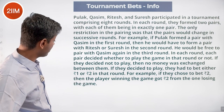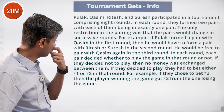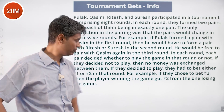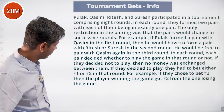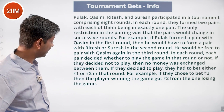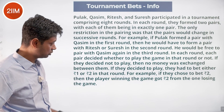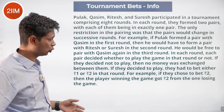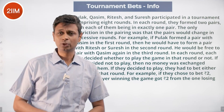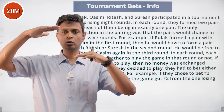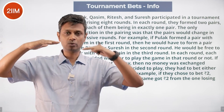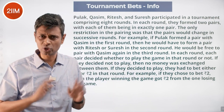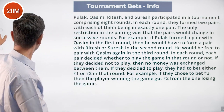In each round, each pair decided whether to play the game in that round or not. If they decided not to play, then no money was exchanged between them. If they decided to play, they had to bet either one or two rupees. For example, if they chose to bet two, the player winning the game got two rupees from the one losing. So two people playing could result in plus two/minus two, plus one/minus one, or no money exchanged — zero.